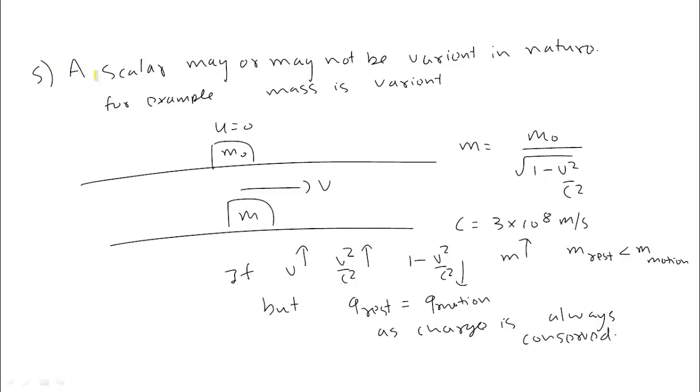Next property: A scalar may or may not be variant in nature. Variant means something that can vary. Take mass as example - Einstein gave this formula. Suppose a body is at rest with mass m₀. If that body starts moving with velocity v, then the body's mass changes.